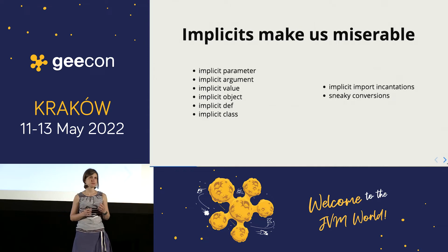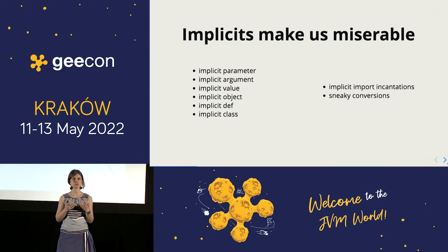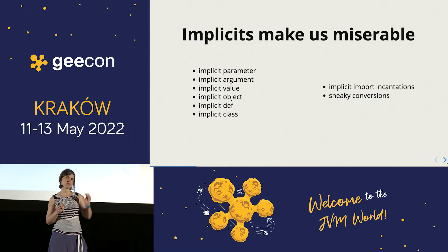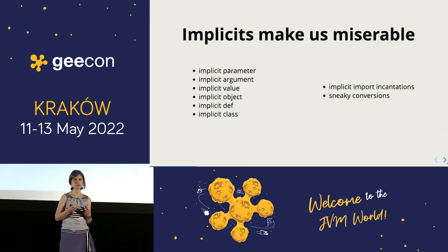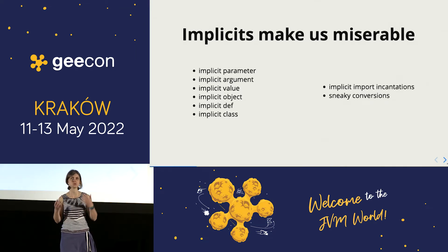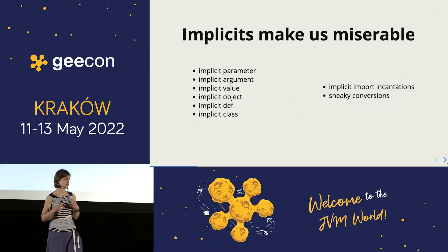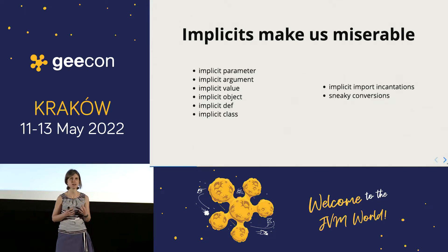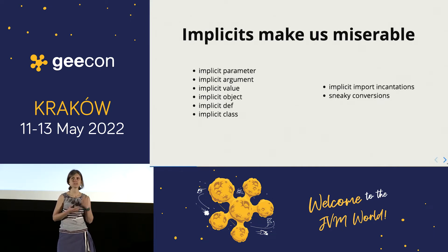Another problem is kind of the opposite: sneaky conversions. Because sometimes in that long list of imports you could have imported too much — you could have imported an implicit conversion into scope, which means that for your compiler some types are treated as other types, and then you're confused and don't know why it compiles or works that specific way. This whole set of issues is one of the reasons why Scala can sometimes be considered difficult — that it's a difficult language, hard to learn, hard to understand.